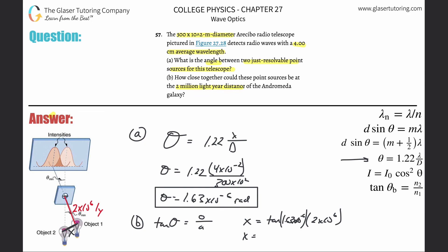Make sure it's in radian mode. Tangent of that prior answer, 1.63 times 10 to the minus 6th, then multiplied by 2 times 10 to the 6th, and we get a value of about 3.25 light-years.